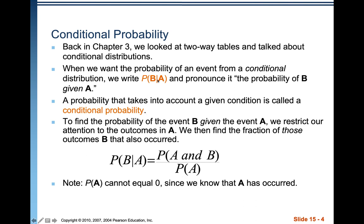This little line — like half of an absolute value bar — is read 'given.' So probability of B given A means: if we know that A occurs, under that condition, what's the probability that B occurs? The way we find that probability is the probability of A and B divided by the probability of A. Since A is given, the probability of A cannot equal 0, so we don't have to worry about dividing by 0.